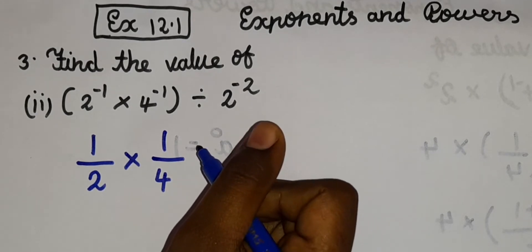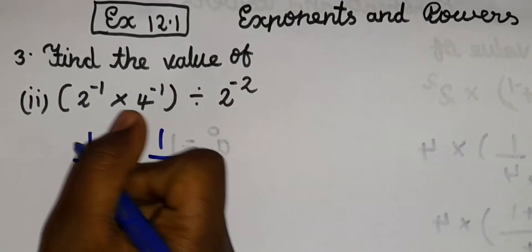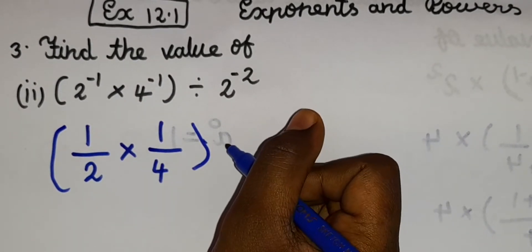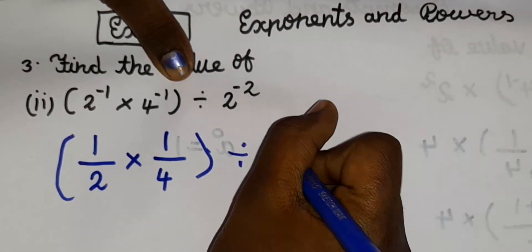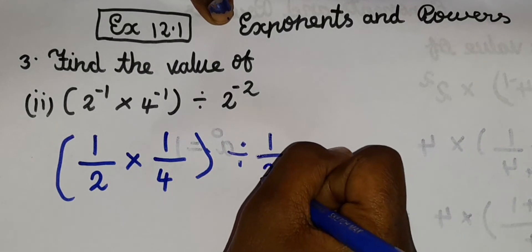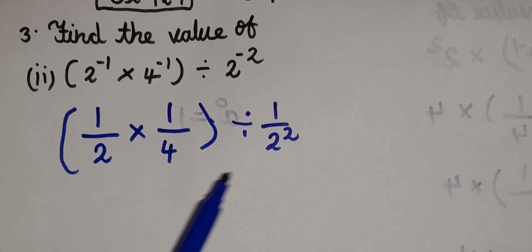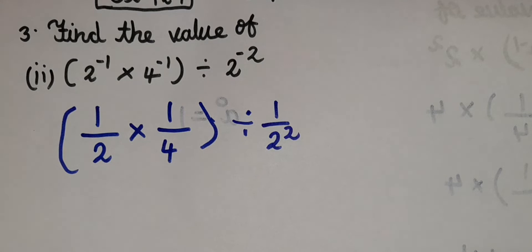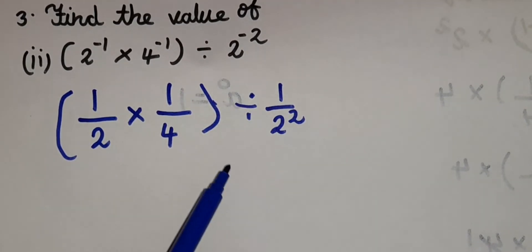Only when we have the number 1 in the power, no need of writing the power here. So now we can write bracket divided by 1 by 2 power 2. You can see why did I write this 2? Because only when 1 is there, no need of writing. But if 2 is there, we should write it. So here also I had a minus symbol. That's why I made it as 1 by 2 power 2.